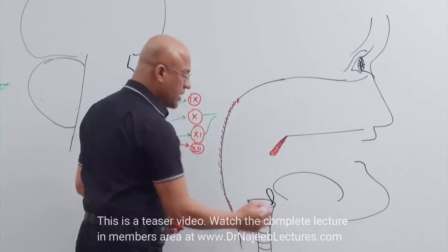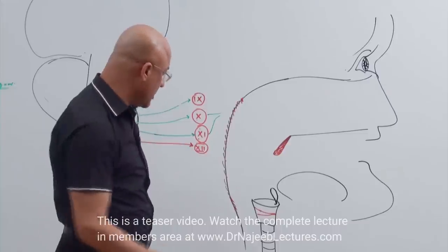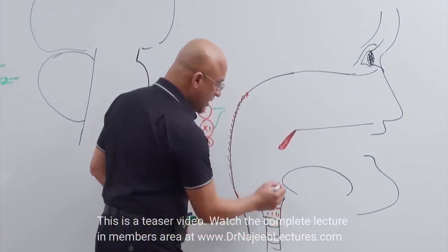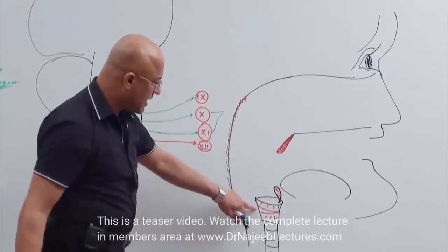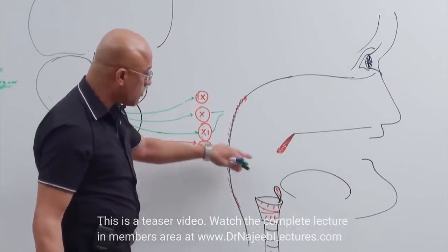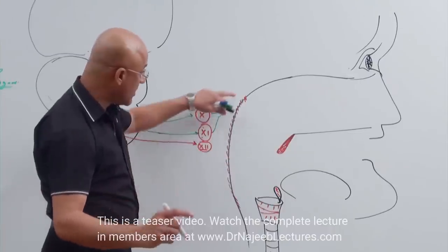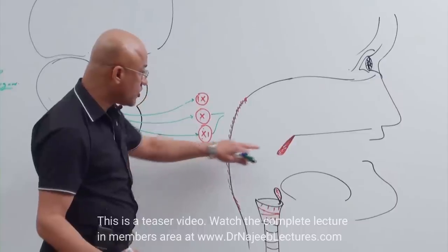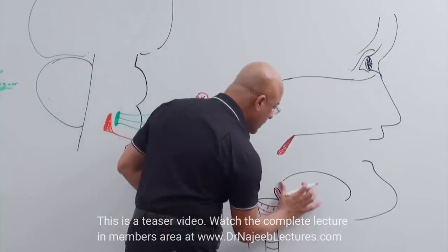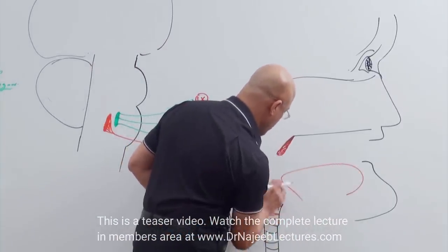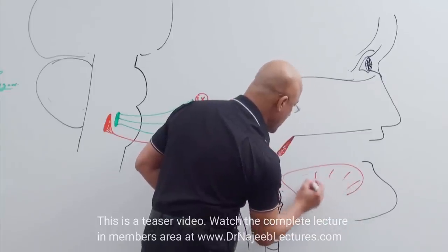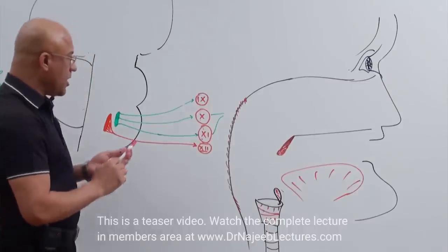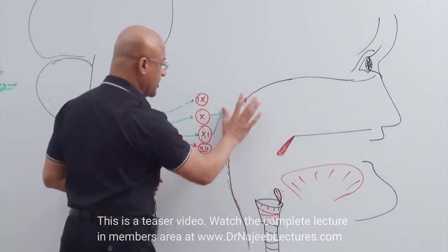So what are the structures supplied by the bulbar nerves? Starting from below: larynx, pharynx, soft palate, and of course don't forget the tongue. So bulbar nerves basically supply this musculature — the larynx, pharynx, soft palate, and tongue.